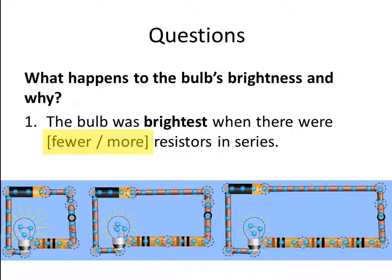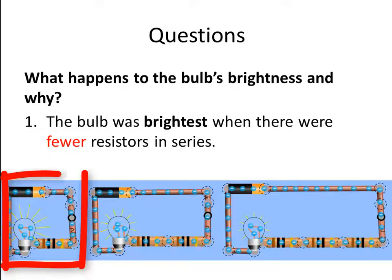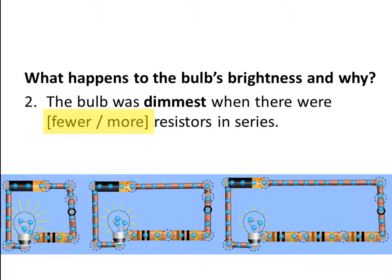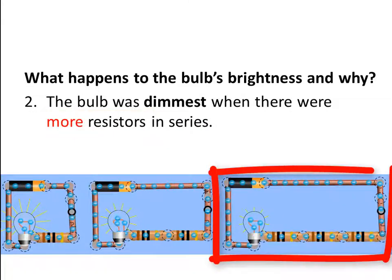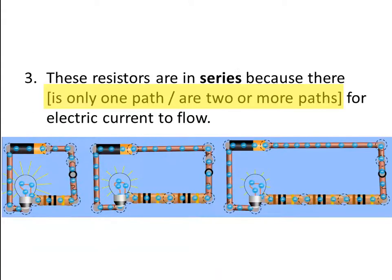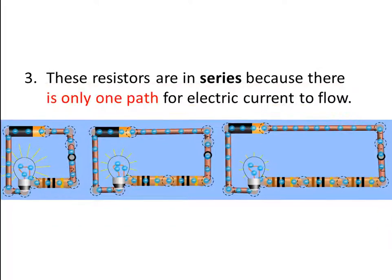Pause the movie while you decide which option is correct. The bulb was brightest when there were fewer resistors in series. And the bulb was dimmest when there were more resistors in series. These resistors are in series because there is only one path for electric current to flow — that's how we know that these are series circuits.